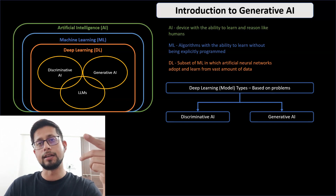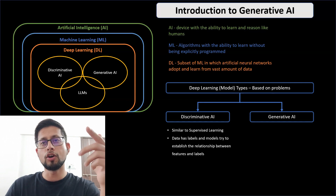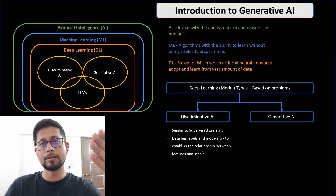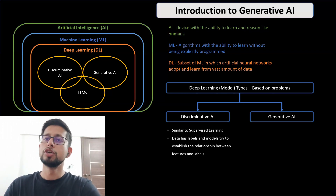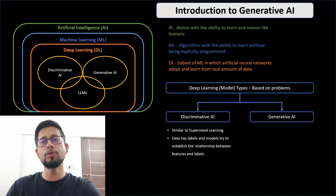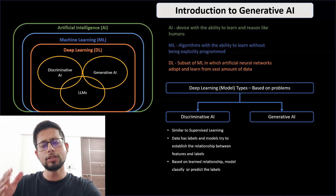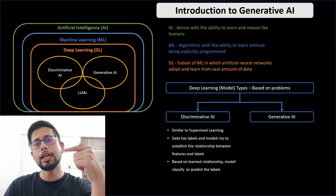Discriminative AI, as the name suggests, classifies objects into certain categories. Generative AI generates content. Discriminative AI is similar to supervised learning — it has labels defined, understands the relationship between features and labels, and then predicts those labels. So it classifies or predicts labels based on learned relationships. This is what we know as predictive or discriminative modeling.